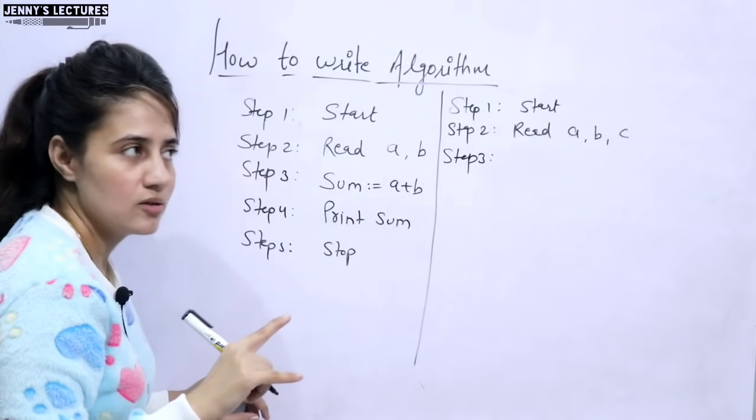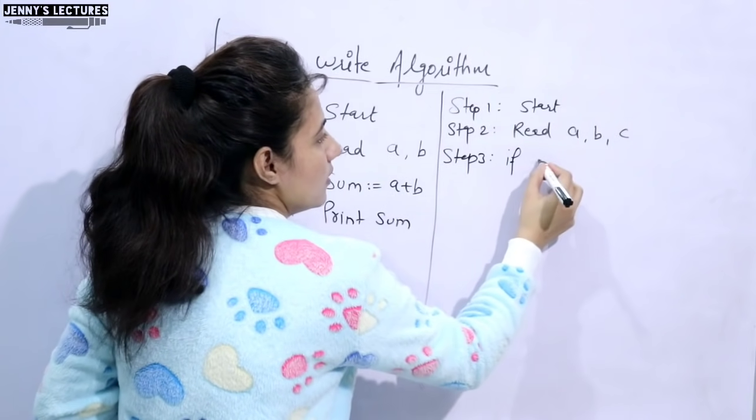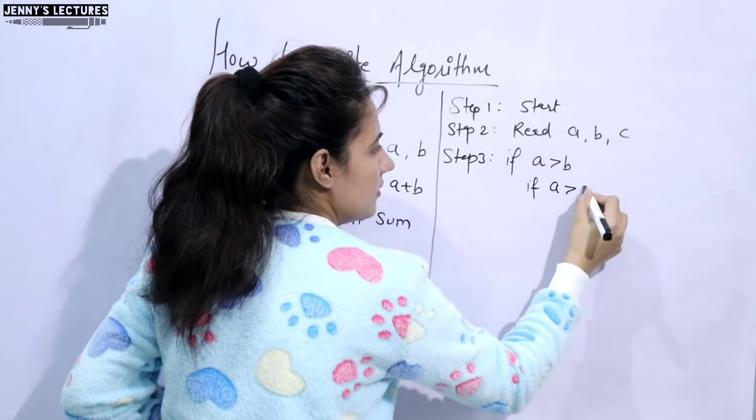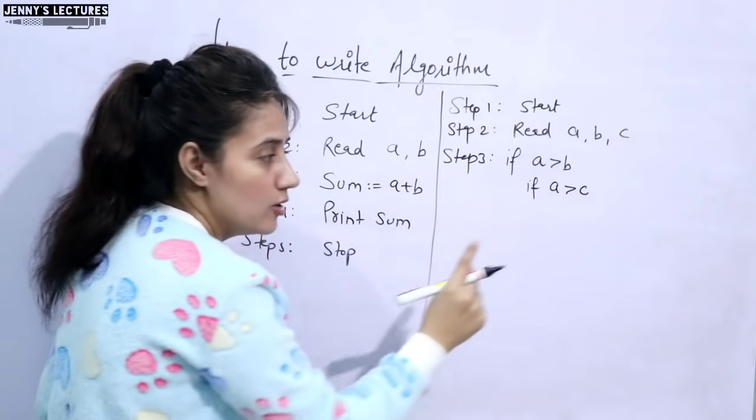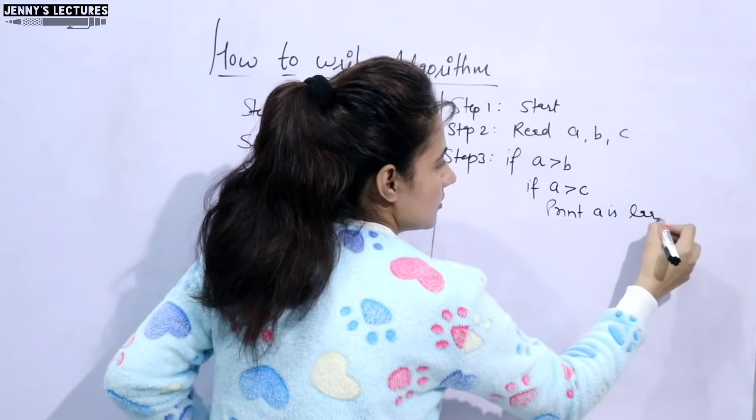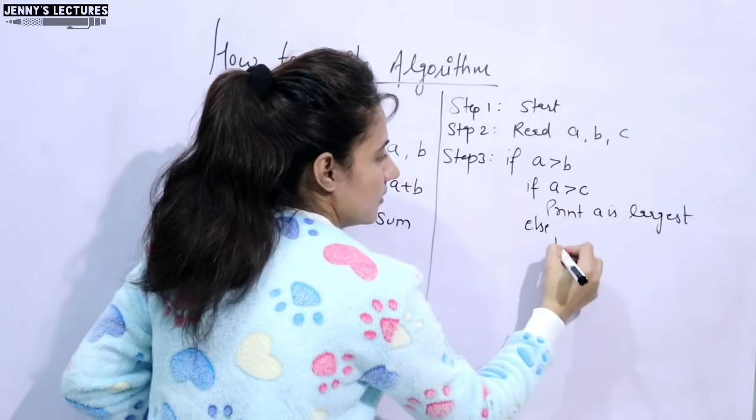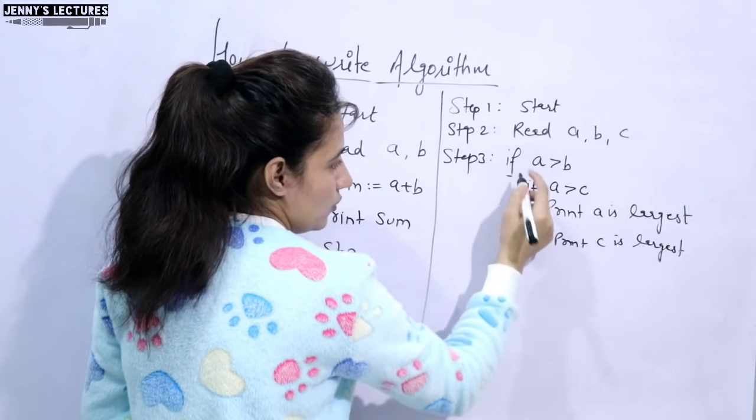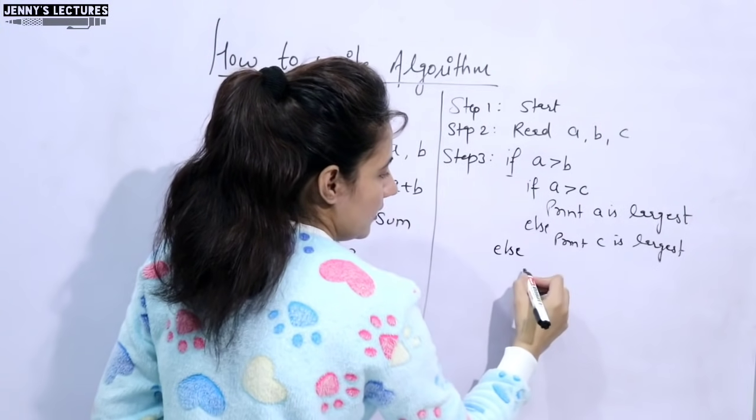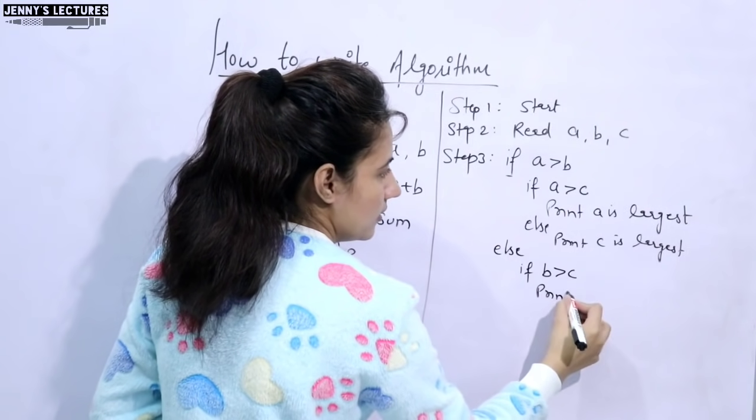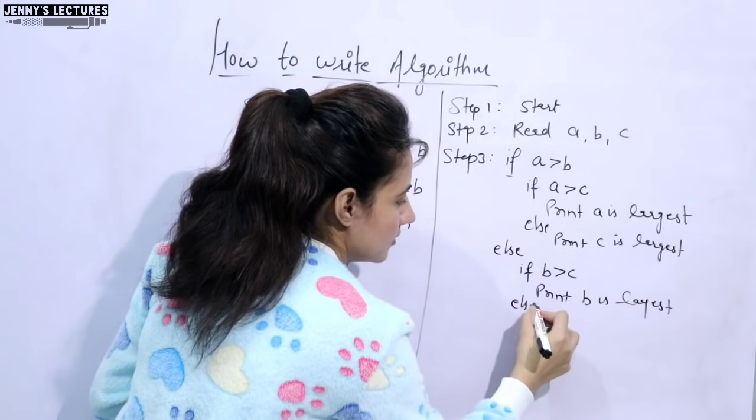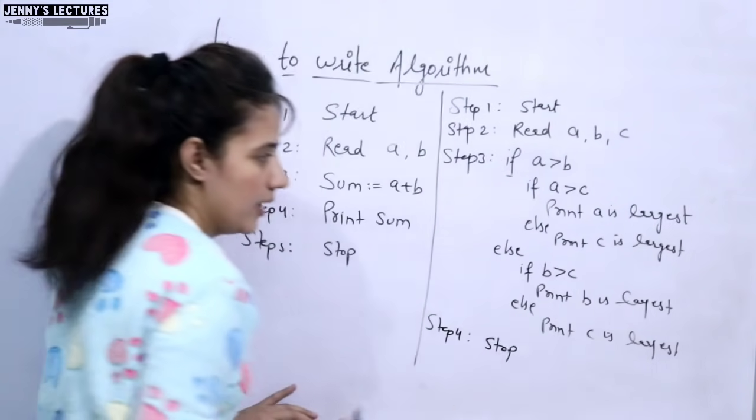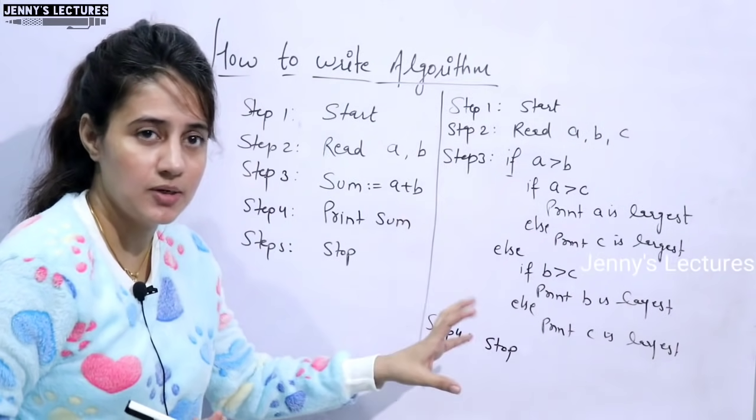Now step third is, now you need to check which one is largest. So how can you check? Like if we write if a greater than b, then here also you will check if a greater than c. If a greater than c, means largest is what? a. So here you can write print a is largest. Else, print c is largest. I hope you are getting why I am writing c is largest. Now if-else for this if-else, we will check if b greater than c, then you will print b is largest, else print c is largest. And now it's done. In step four you can write stop or end.